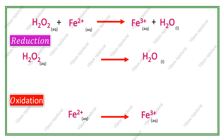The second step is balancing the central atoms. In the oxidation reaction, the number of iron atoms are the same on the reactant and product side. But in the reduction reaction, the number of oxygens are different — on the reactant side there are 2 oxygens, and on the product side there is only 1 oxygen. To balance the oxygen, we introduce a coefficient of 2 on the product side.